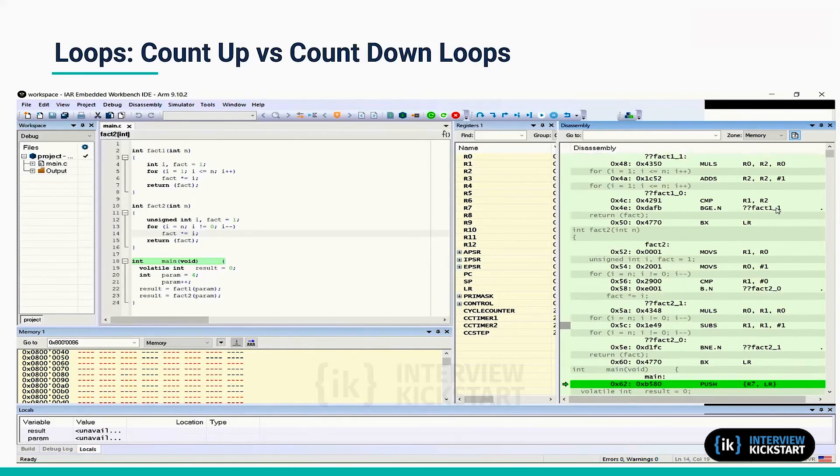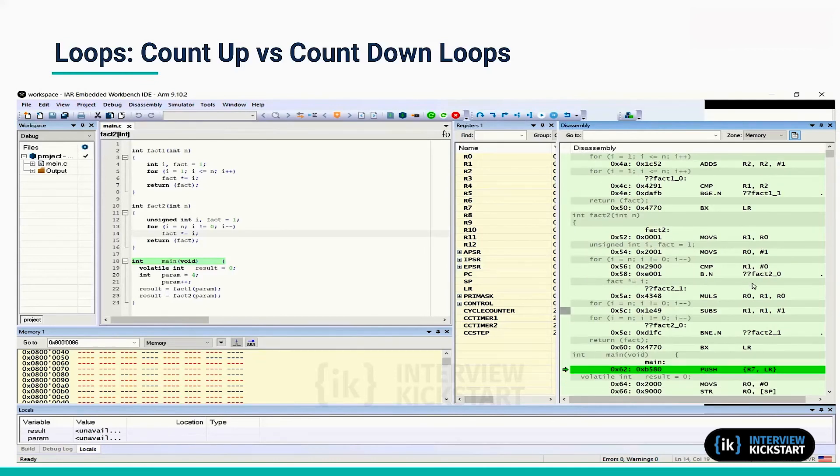Like in the previous case, there is an add followed by comparison. Here there is a subtract followed by no comparison because it is zero comparison against zero. It is implicit. So it is using this zero bit of the condition register and using the conditional execution, it avoids one explicit comparison operation.